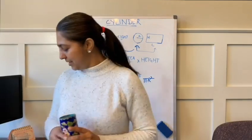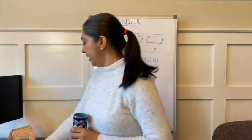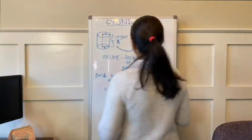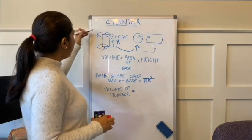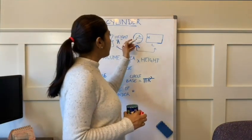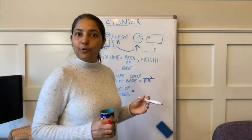So I have written all of this down on the whiteboard right here, as you can see. So here we have the cylinder, we have the circle and the rectangle that we already discussed.